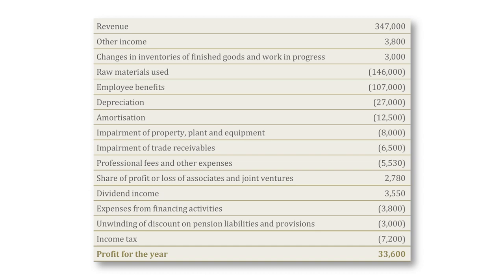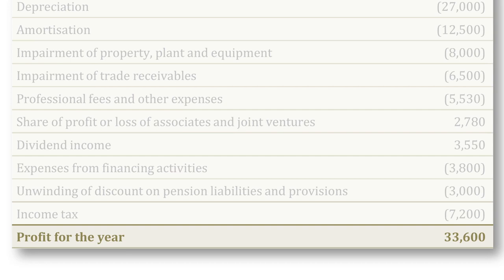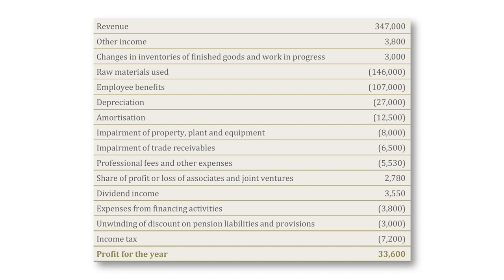The IASB has issued a lot of new standards in the last decade and the standards all focused on recognition and measurement, such as for example revenue recognition. But interestingly, we have done very little to improve presentational requirements, and as a result the income statement under IFRS is rather form-free. We define revenue at the top and we define profit or loss at the bottom, but in between we do not really define any subtotals.